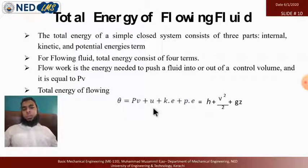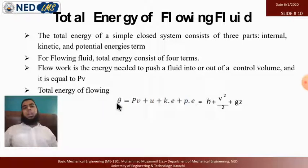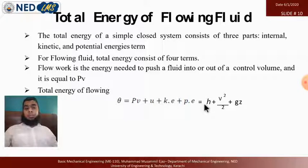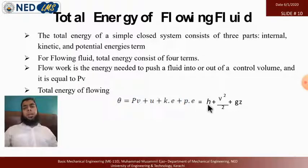As we did in previous numericals, work is written in the form of PV. Here, PV (pressure-volume flow energy) plus internal energy equals enthalpy. So the total energy of flowing fluid is: enthalpy (h) plus kinetic energy (V²/2) plus potential energy (gz). When multiplied by mass m, mh becomes capital H, and the specific form uses lowercase letters.